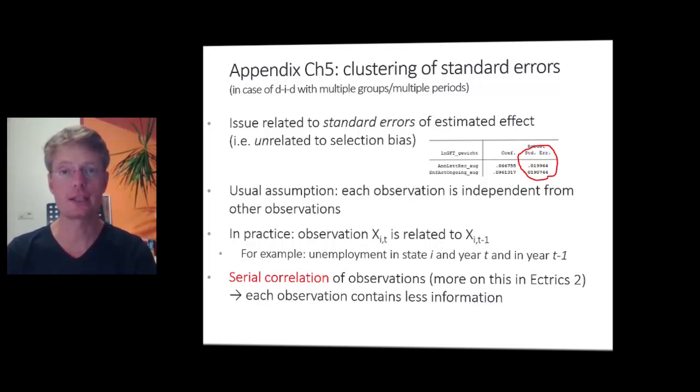Now the issue is that we implicitly assume when running our regressions that each observation in your dataset is an independent draw from a sample. Whereas in practice, when you're working with data,